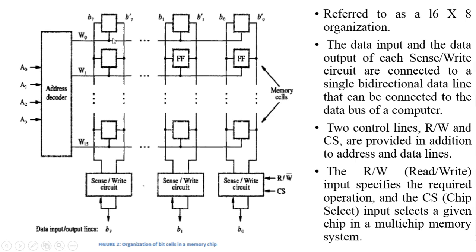Here we have different rows and different columns. Each row represents a memory byte, and in each row we have a different number of cells. Each memory cell can store a single bit of data, like 0 or 1, and these single cells are actually flip-flops.